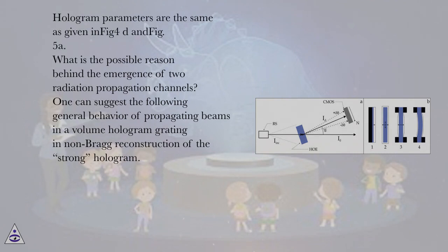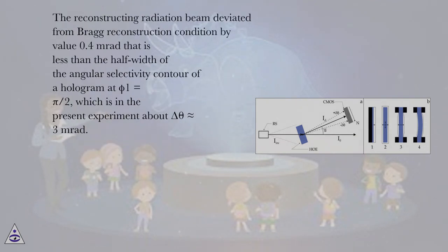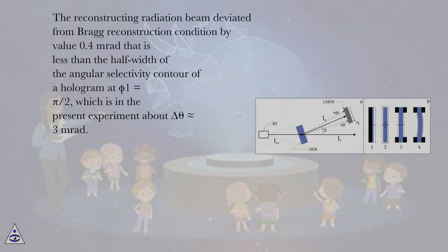What is the possible reason behind the emergence of two radiation propagation channels? One can suggest the following general behavior of propagating beams in a volume hologram grating during non-Bragg reconstruction of a strong hologram. The reconstructing radiation beam is deviated from the Bragg reconstruction condition by 0.4 mrad, which is less than the half-width of the angular selectivity contour of the hologram at φ₁ = π/2, which in the present experiment is about δθ = 3 mrad.